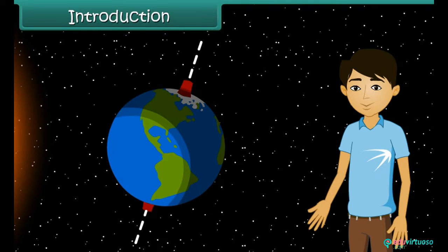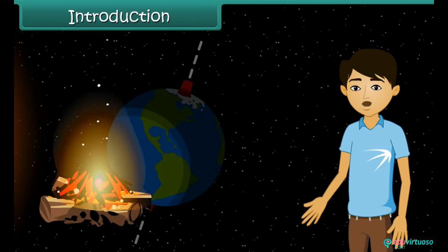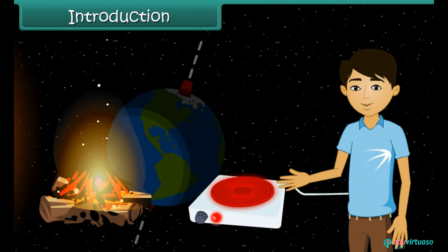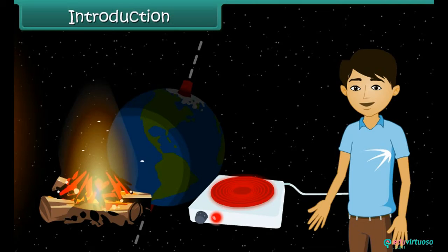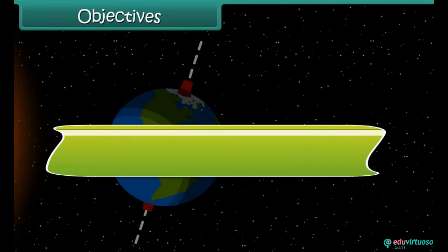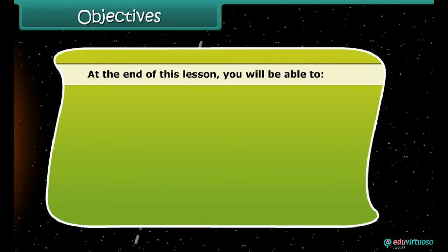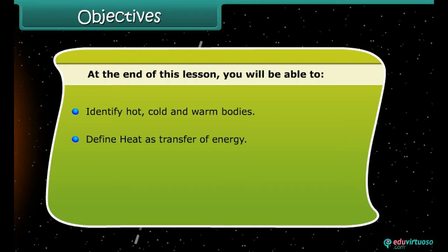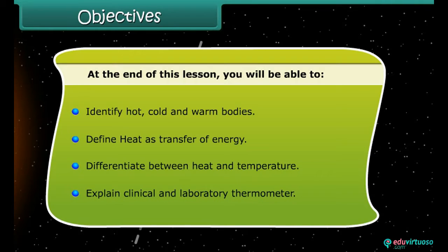Other sources of heat are fire and electric heaters. In this lesson, we will study about heat and its measurements. At the end of this lesson, you will be able to: identify hot, cold and warm bodies; define heat as transfer of energy; differentiate between heat and temperature; and explain clinical and laboratory thermometers.